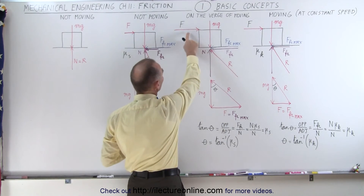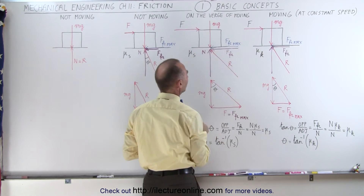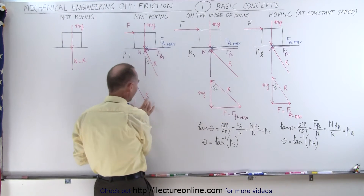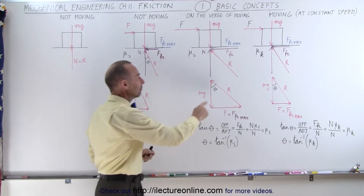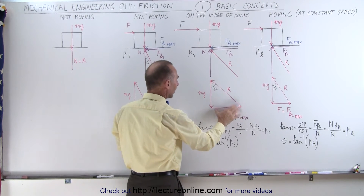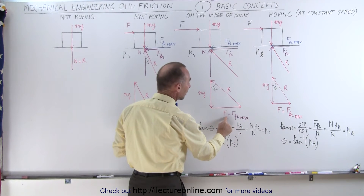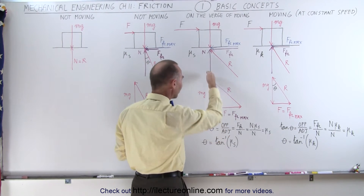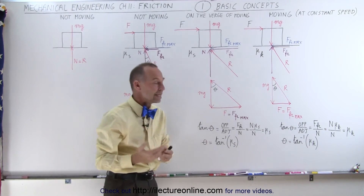In the third case, we increase the force so that it now matches the maximum friction force. The block is still not moving. The drawing of the forces now looks similar, but the angle is now larger — it's the maximum angle we can have. We can find the value of this angle by realizing that the tangent of the angle equals the opposite side divided by the adjacent side. The opposite side is the friction force, equal to the horizontal force applied; the adjacent side is the weight, equal to the normal force.